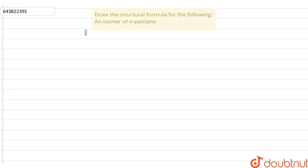Hello everyone, let's start the question. This question says that, draw the structural formula for the following: an isomer of n-pentane.